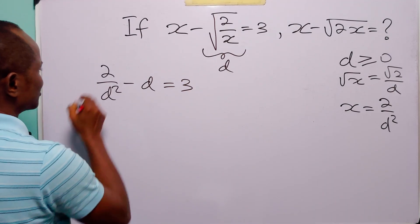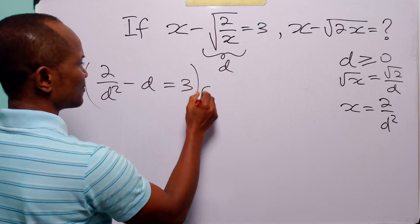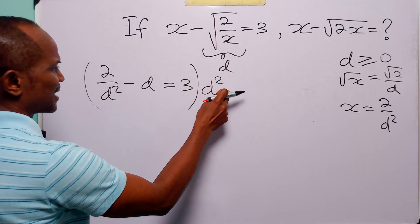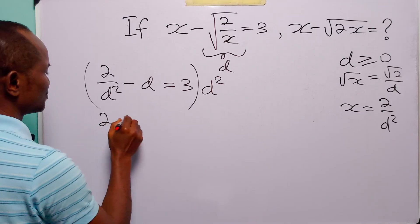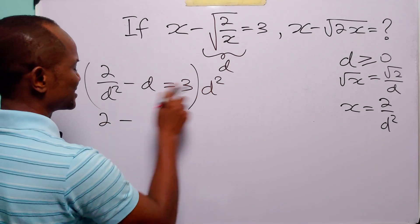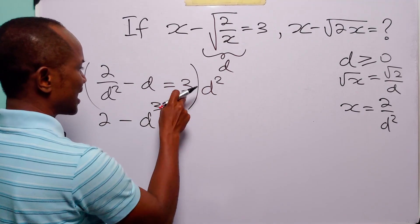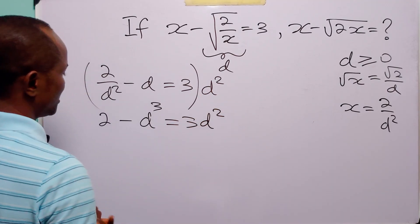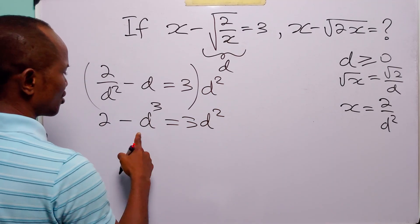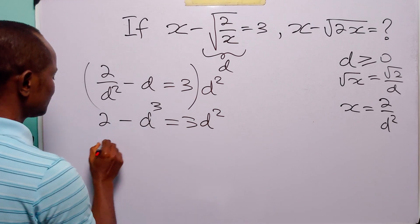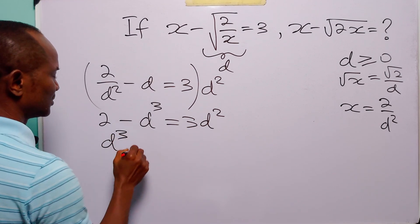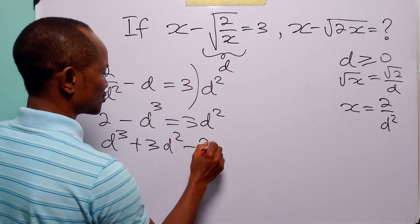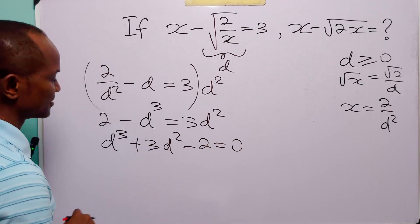To get rid of the fraction, let us multiply through by d squared. 2 over d squared multiplied by d squared is 2. d times d squared is d cubed. And 3 times d squared is 3d squared. Rearranging this equation, we have d cubed plus 3d squared minus 2 equals 0.